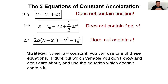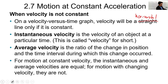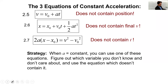A student asks: in the demonstration for example three — zero velocity but still accelerating — why was it still accelerating at the peak of the incline? The instructor explains: acceleration is the slope of the velocity curve. In the demonstration, the cart started with negative velocity, moving to the left. If you plot V versus time, it starts negative and comes back up.